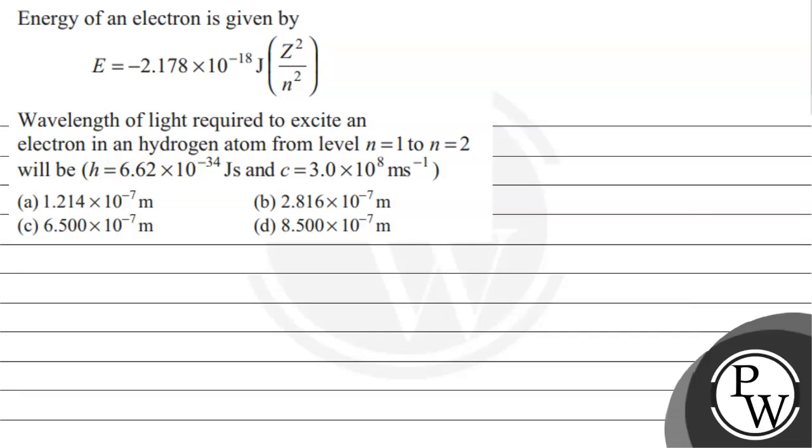Hello, let's read the question. The question says energy of an electron is given by E = -2.178 × 10^-18 joules × (Z²/n²). Wavelength of light required to excite an electron